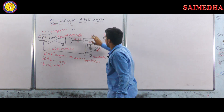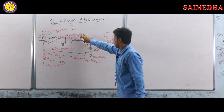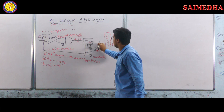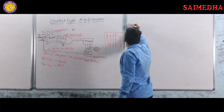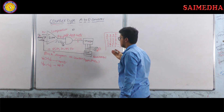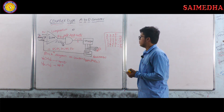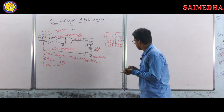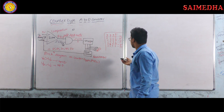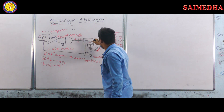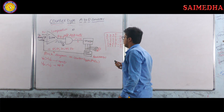The advantages of the counter type A to D converter are that the circuit is simple and it is easy to design. The disadvantages are that the propagation time constant is more, and the conversion time is also more — meaning the time taken to produce the output after applying the input is large in this counter type A to D converter.